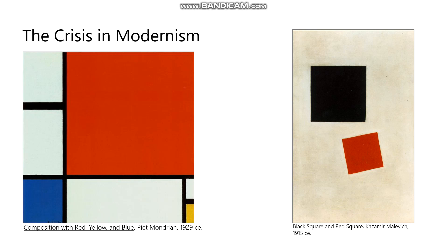We're going to tell somewhat of a complicated story about how we got from there to here. This story begins with one of the issues in modernism, which is that with the focus on essentialism, there can be this sense that we're aiming for somewhere — and then the sense of, well, we got there, so what do we do now?